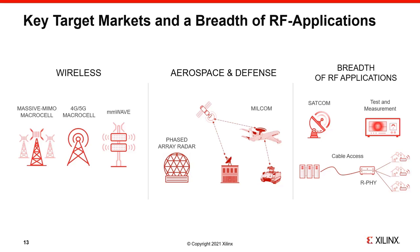RFSOC addresses multiple markets. The three main ones are wireless, wired, and aerospace and defense. In wireless, RFSOC is deployed in 4G, 5G, and millimeter-wave applications. In aerospace and defense it is used in applications such as phased array radars and signal intelligence (SIGINT). A perhaps less obvious application is DOCSIS 3.1 cable modems. Other strong markets include satellite communications and ground stations. RFSOC is also very useful in test and measurement applications and is even used in LiDAR testers, demonstrating how RFSOC enables Xilinx's broader vision of an adaptable intelligent world.